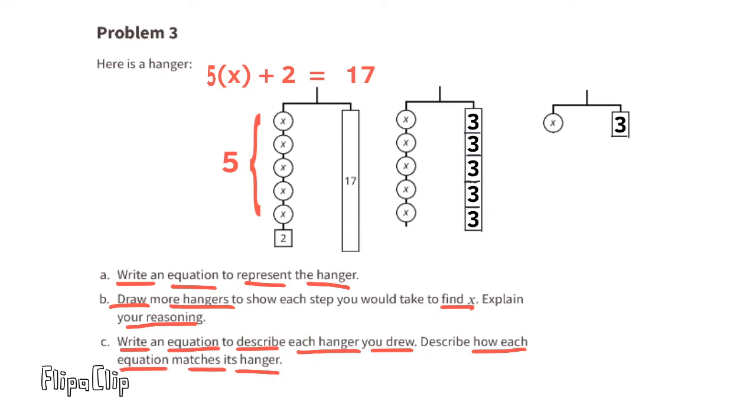Part c: Write an equation to describe each hanger you drew. Describe how each equation matches its hanger. You can see three hangers here. Starting with the hanger on the left, you have 5x + 2 and that equals 17. The equation is written above it: 5x + 2 = 17.